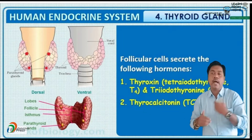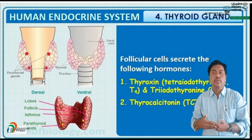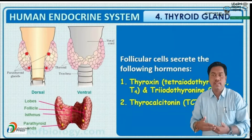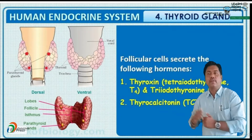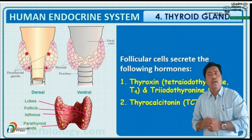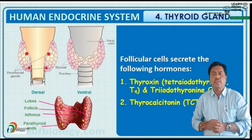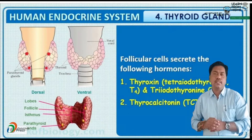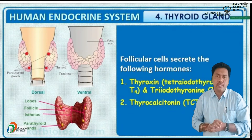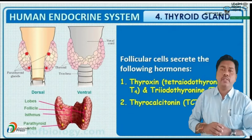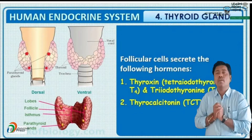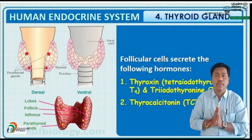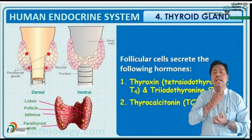Due to the deficiency of iodine, it leads to goiter disease. The symptom of goiter is that the thyroid gland becomes enlarged — swelling and inflammation occur in the thyroid gland area. Iodine is available in seafood and green vegetables. This condition caused by iodine deficiency is known as simple goiter.